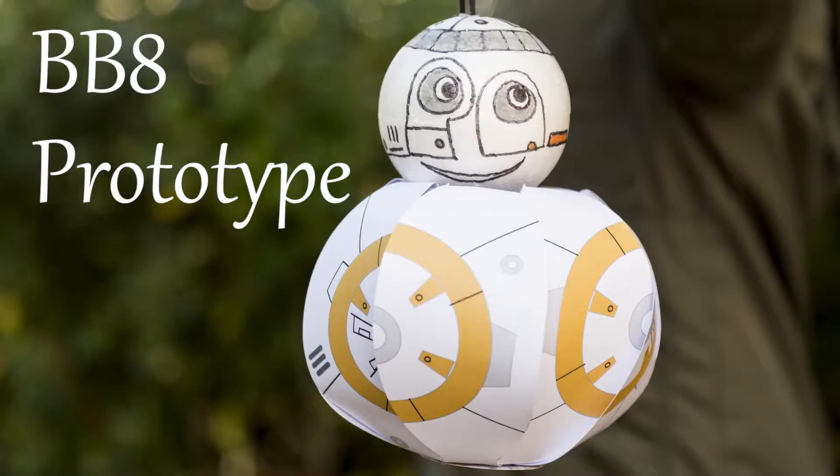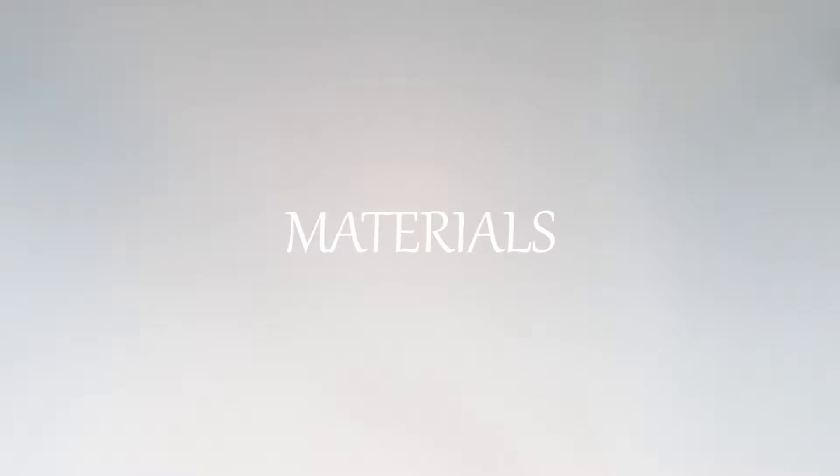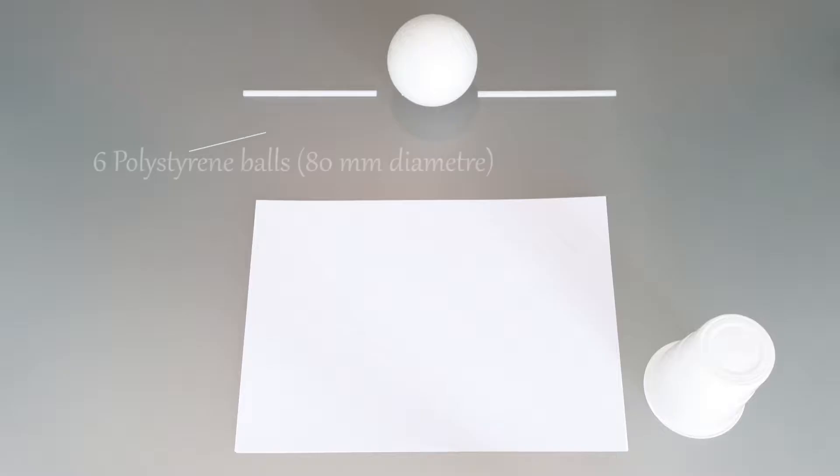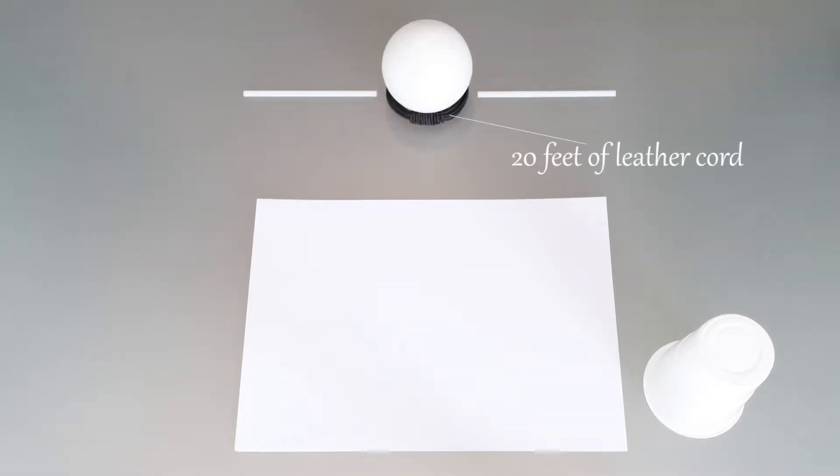Today I invite you to make this cute BB-8 prototype. Materials: 3 A4 card, two straws, six white plastic cups, six polystyrene balls 80 millimeters in diameter, 20 feet of leather cord.